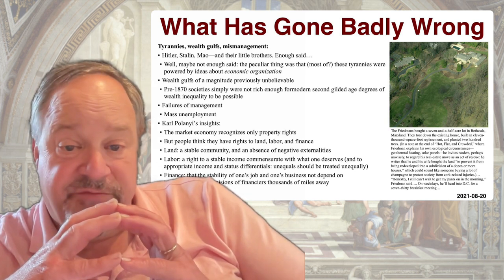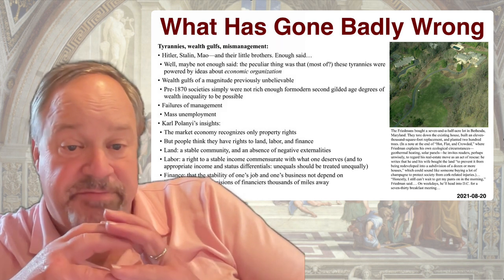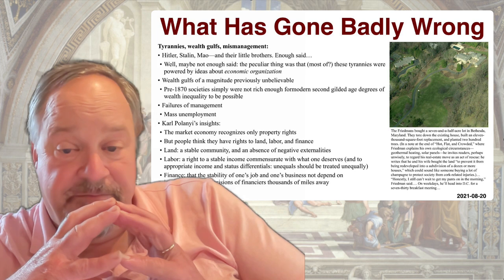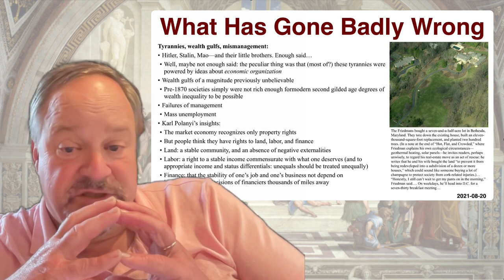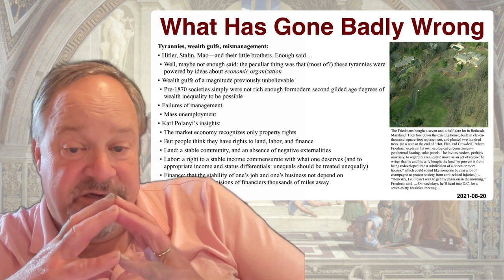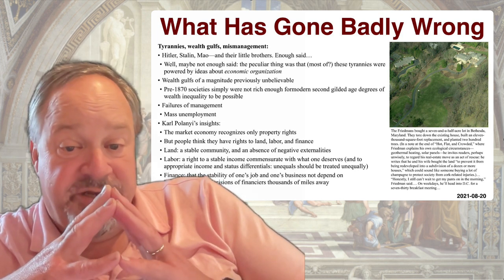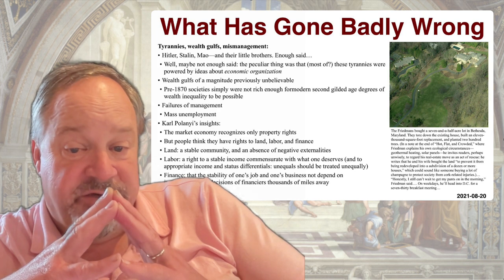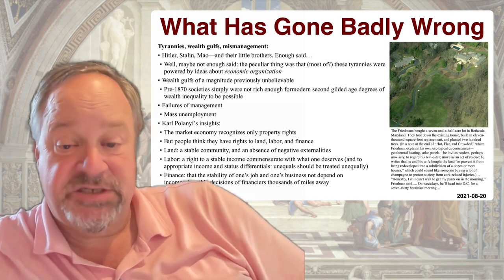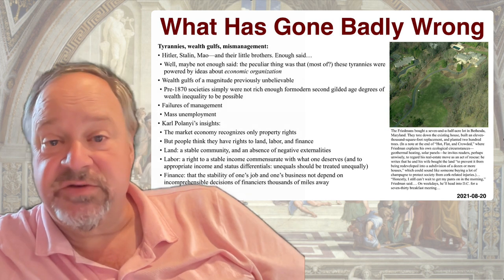We have Polanyi's insights into the things that have gone wrong — how the market economy recognizes only property rights and subjects the world to creative destruction, and only if you have valuable property rights can you protect yourself. But people think they have rights to land, labor, and finance. By land, Polanyi meant a stable community protected against negative externalities produced by the churning up of the environment in the pursuit of wealth. By labor, he meant a right to a stable income commensurate with what one thinks one deserves, with appropriate income and status differentials.